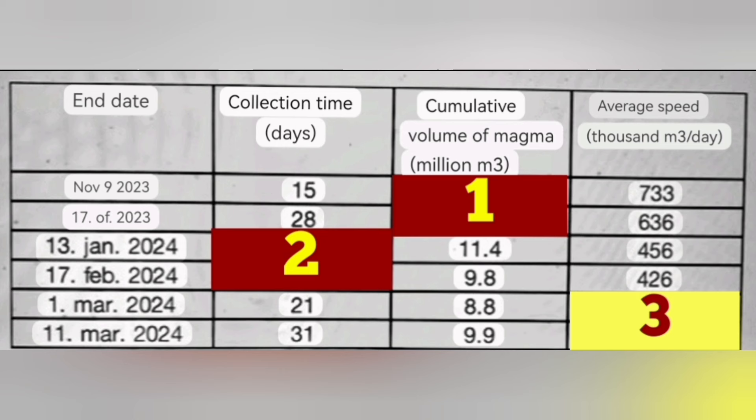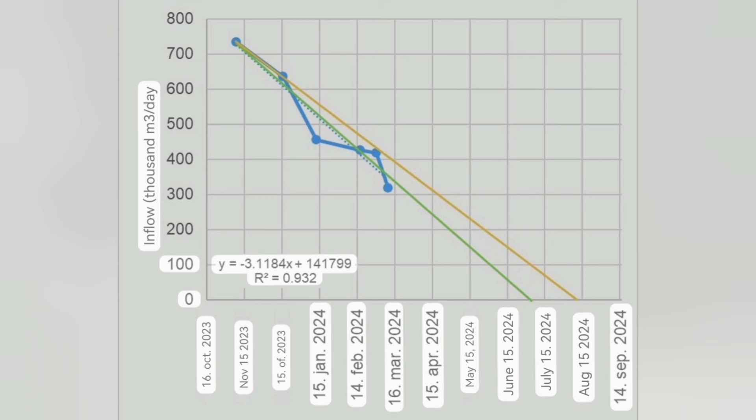And then they plotted it on a diagram and the diagram shows that if you follow that through two lines, the green line is without the waste of the March eruption, which wasted around two million cubic meters of magma. The yellow line shows if you consider that, the time is added. They all show that by August 2024, we will have come to the end of the Svartsengi volcanic system where there will be no magma flow into the system.